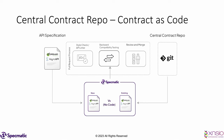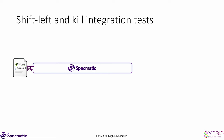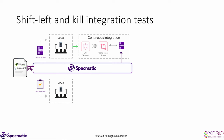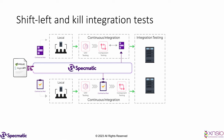To summarize: Specmatic takes the OpenAPI specification. Consumers run tests locally using the contract stub or service virtualization. Providers use Specmatic contract tests to validate their implementation is in sync with the specification. The same applies in CI, both sides referring to the single source of truth — the OpenAPI or AsyncAPI specification. In the integration environment, there are no surprises and you get to production as quickly as possible. That's contract-driven development.